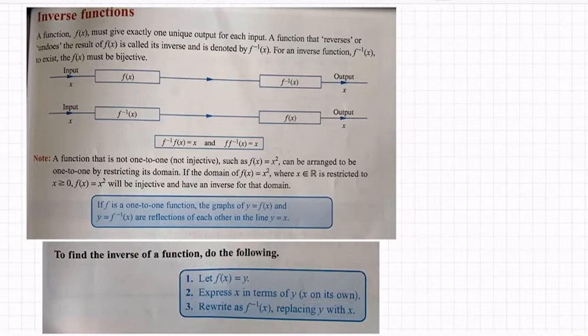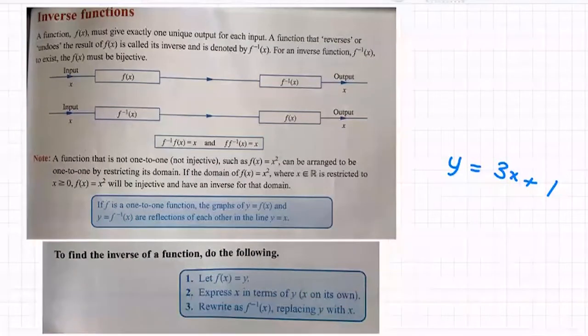So in other words, a normal function would be y equals, we'd say, 3x plus 1. So what we do is we then express it so that x is on its own - I want x equals and everything else on the other side. And then we rewrite it as f inverse of x, replacing y with x. And so that's the process we're going to go through when we do some examples.